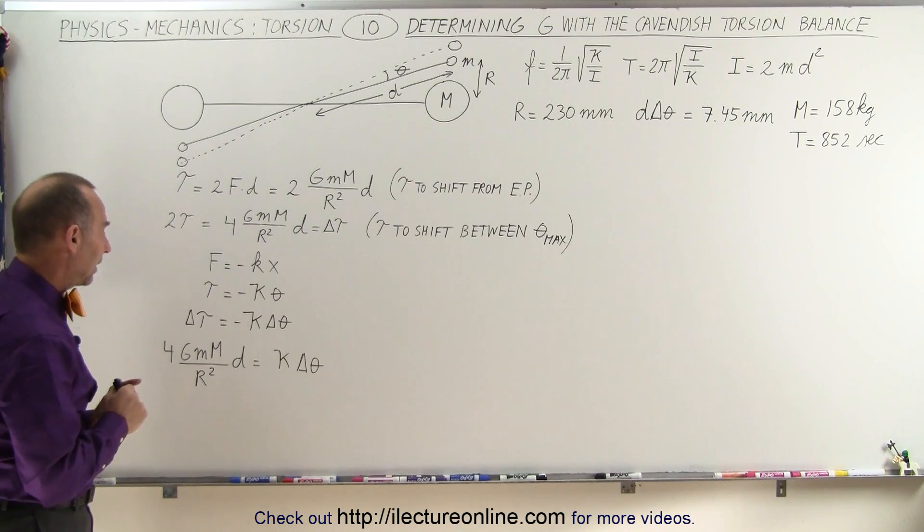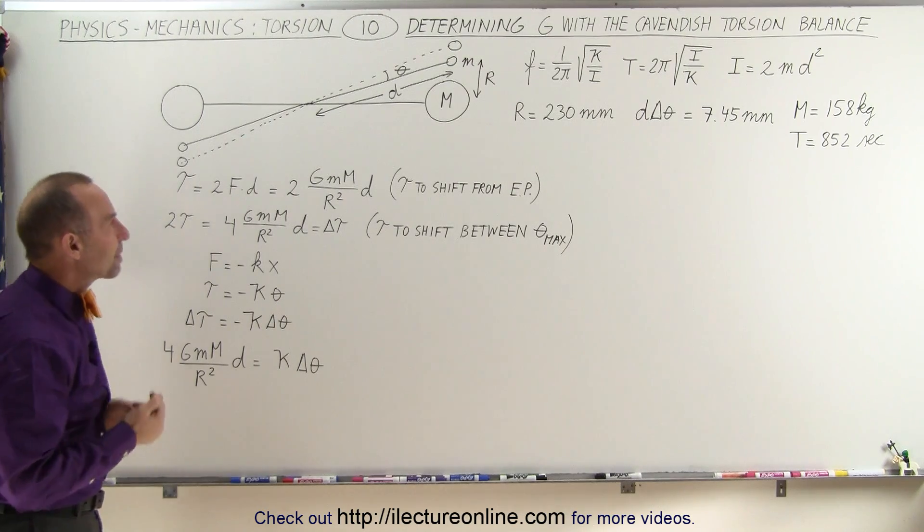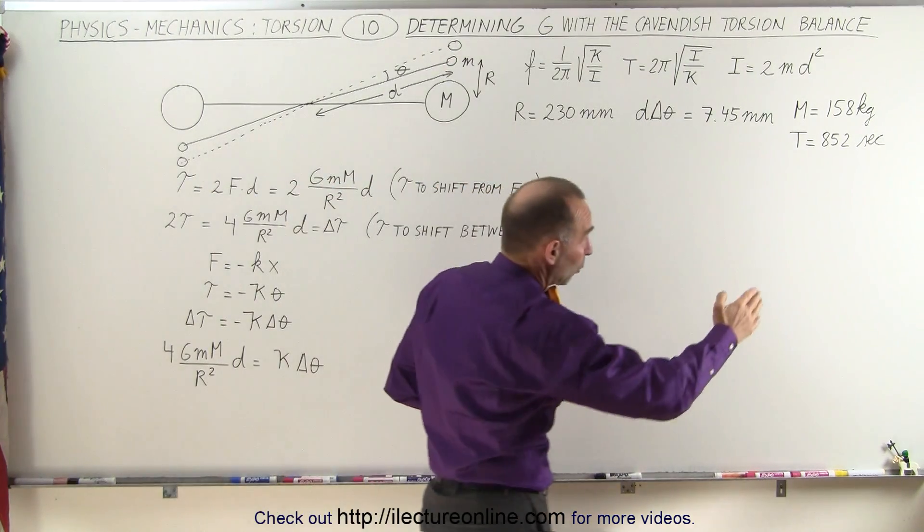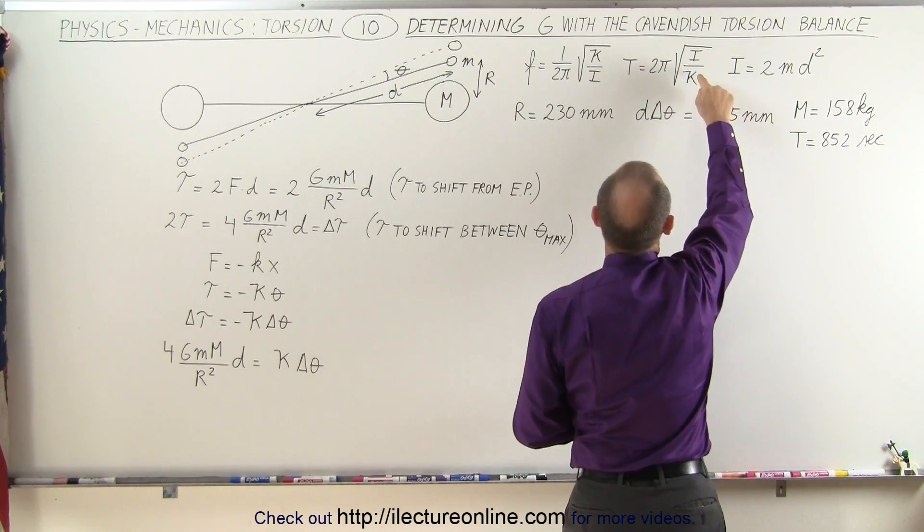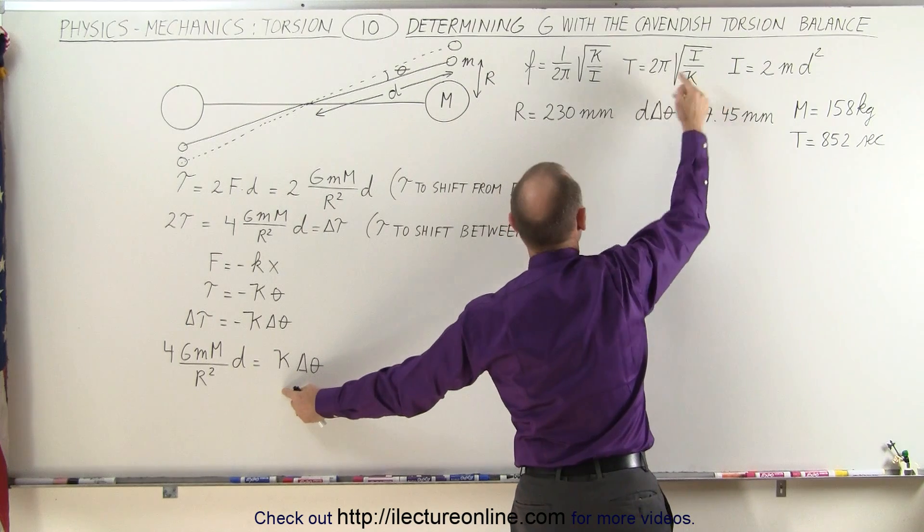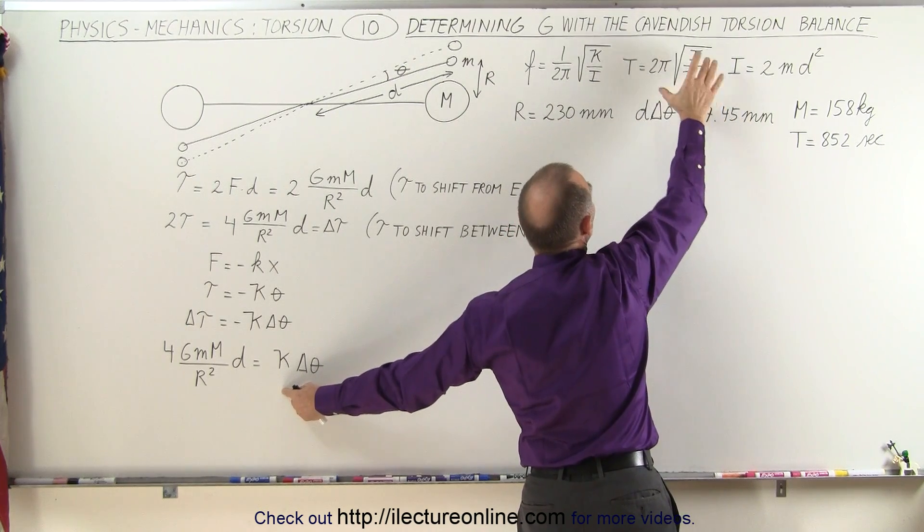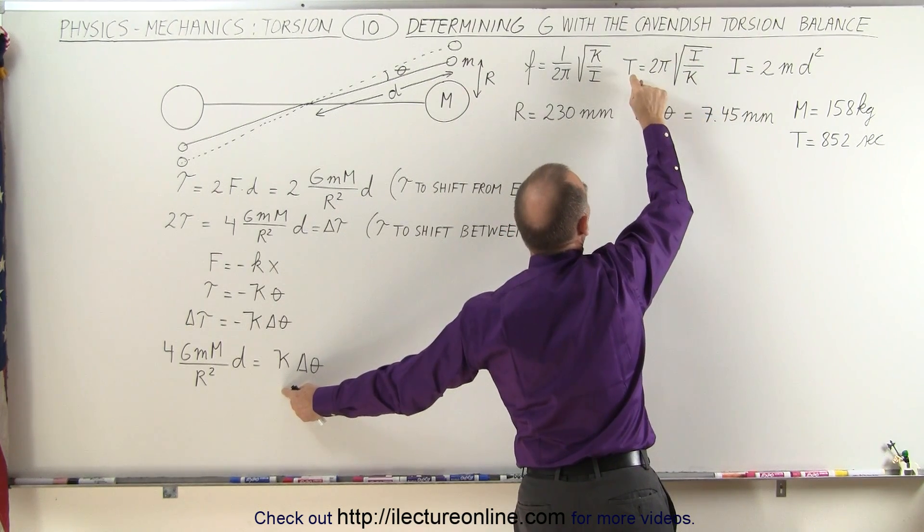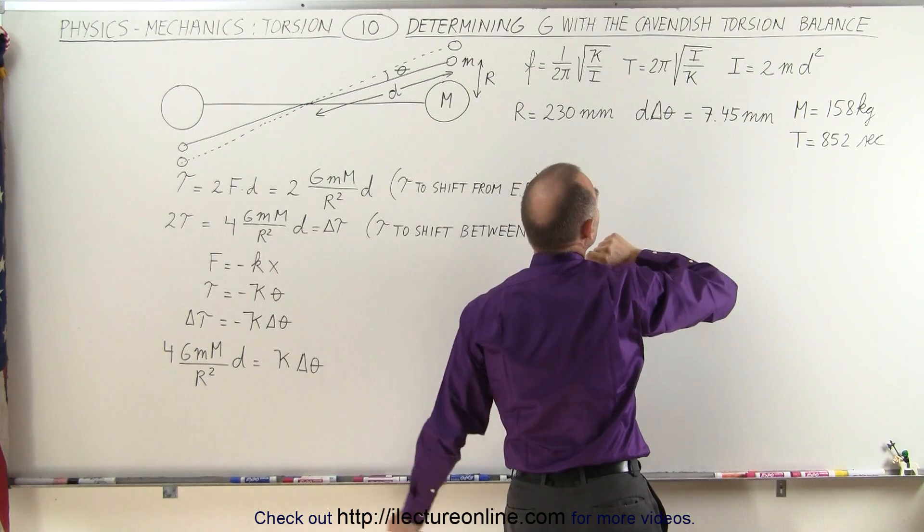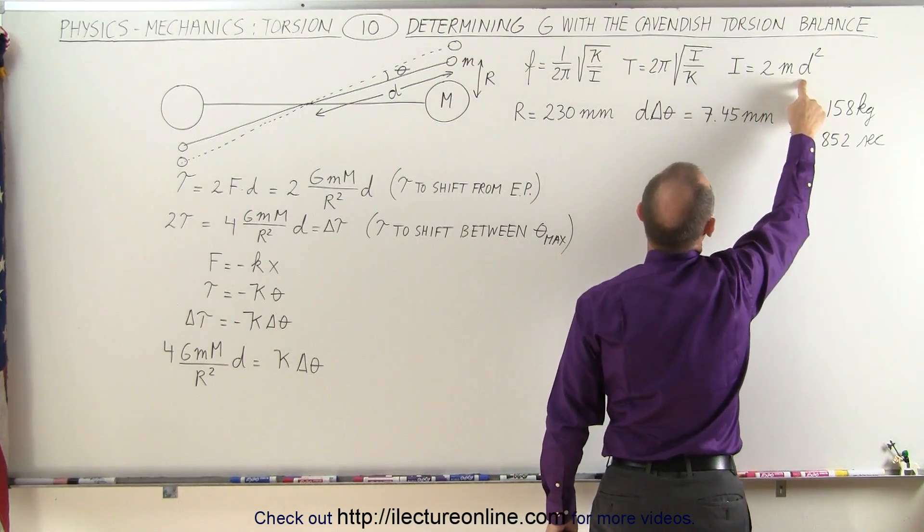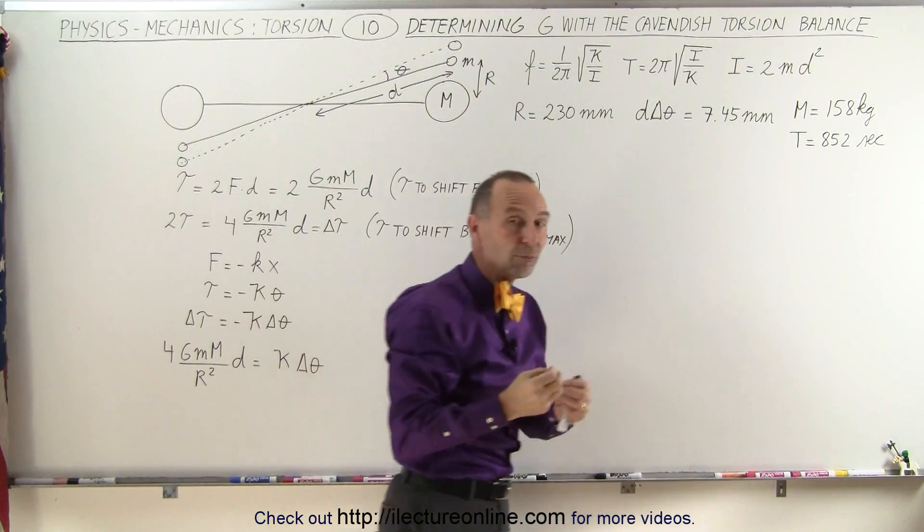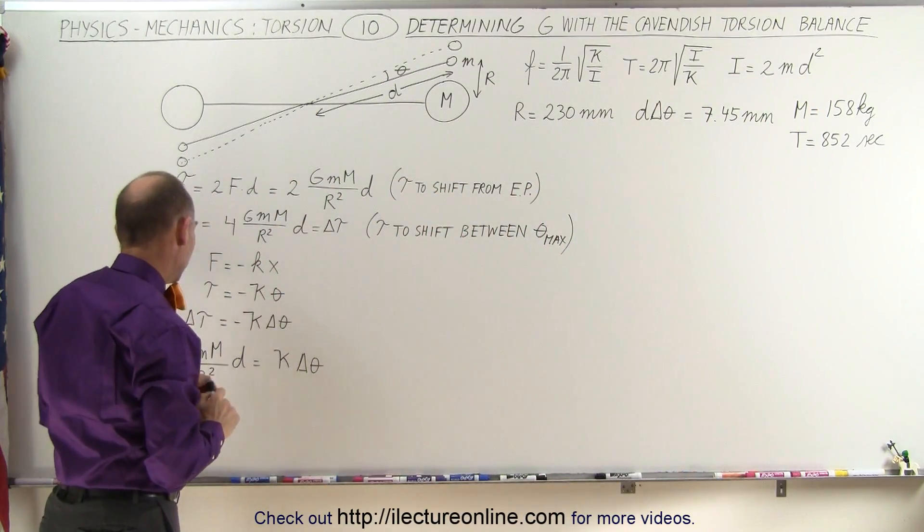The plan of attack, since he was able to measure the period, and the period was quite a long one, it was 852 seconds, we're going to find the value for Kappa from this equation, and plug that into this equation right here to solve for the period T. And hopefully, by knowing that the moment of inertia is 2M times D squared, we might be able to get rid of the small masses.